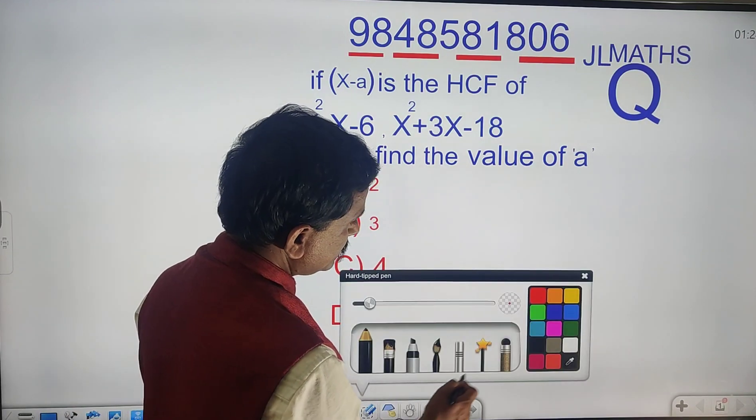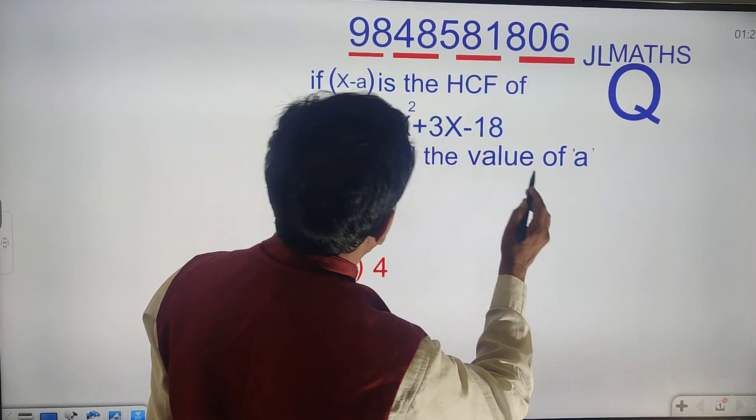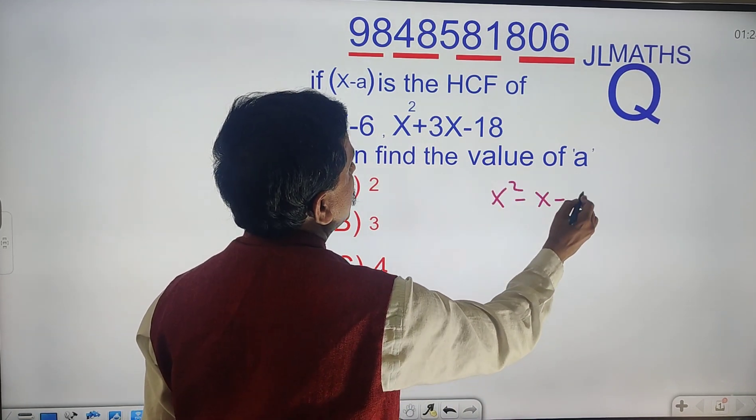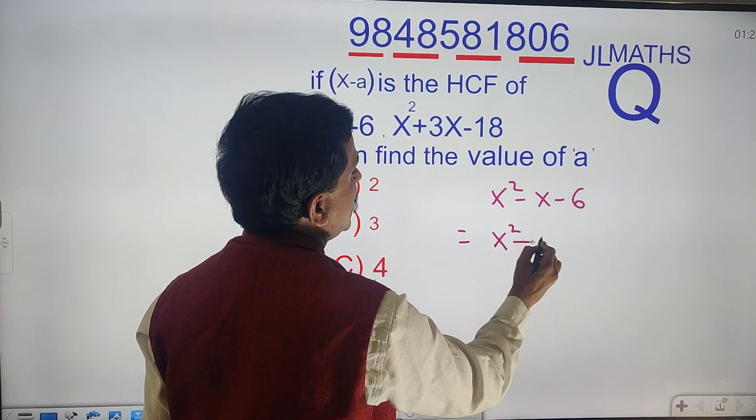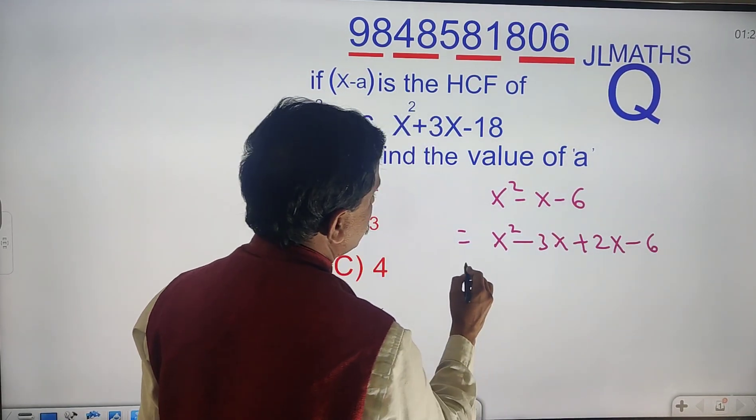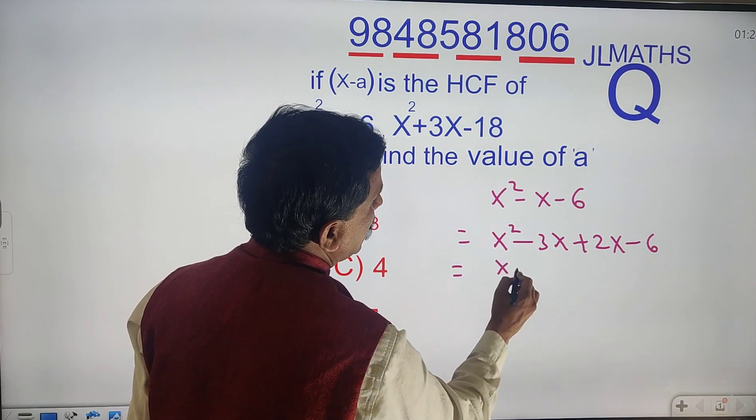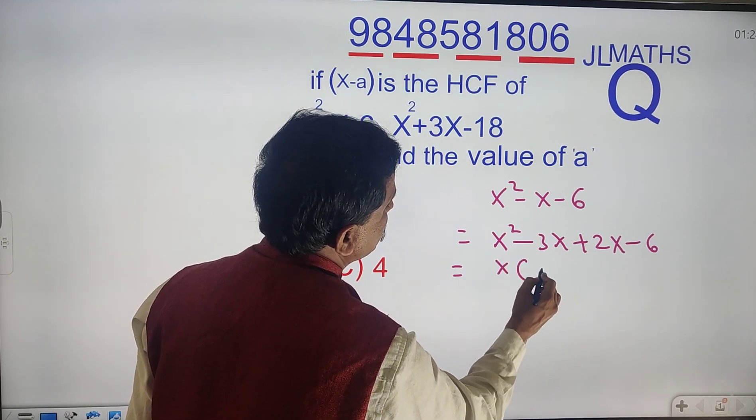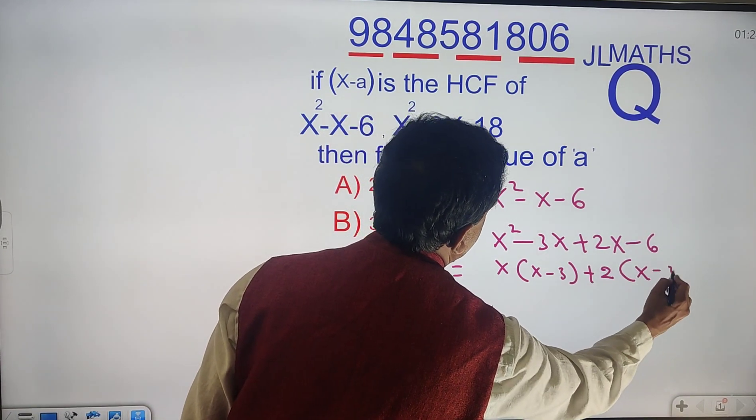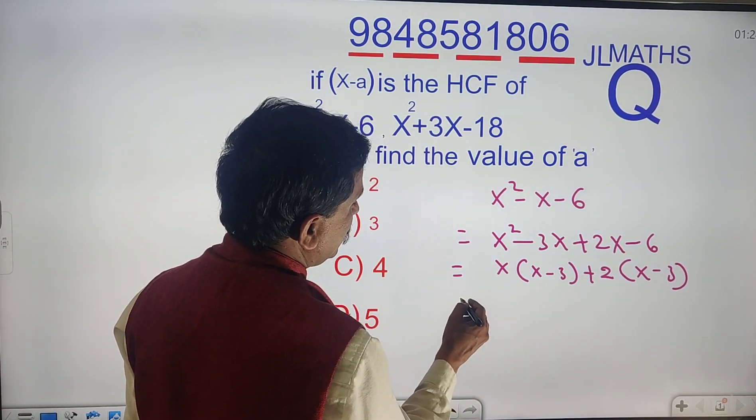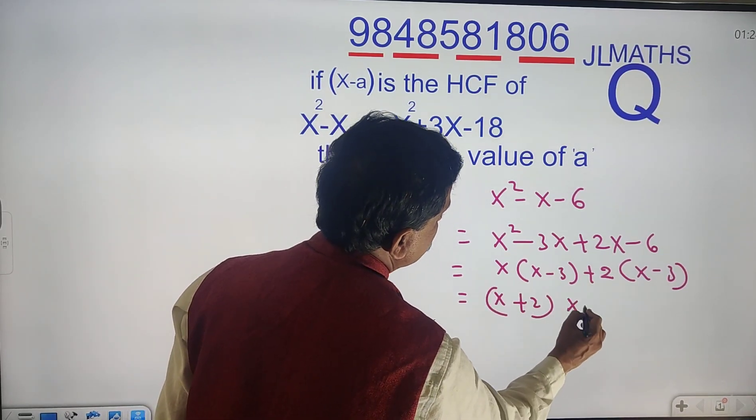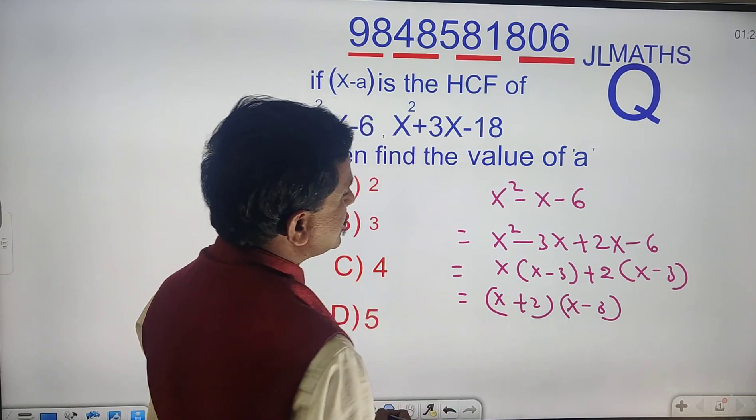x square minus x minus 6 is equal to x square minus 3x plus 2x minus 6. That is equal to x common, x minus 3, plus 2 common, x minus 3. Finally, that is equal to x plus 2 into x minus 3.